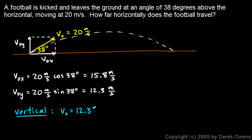Initial velocity vertically is 12.3. We use the vertical component, not the given 20 meters per second. We're only dealing with vertical motion here, so we use the vertical component. The acceleration is negative 9.8 meters per second squared.